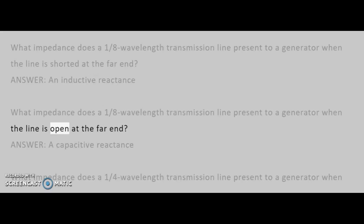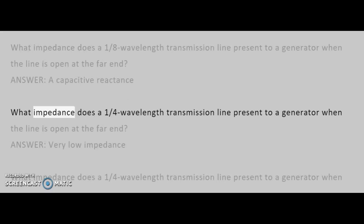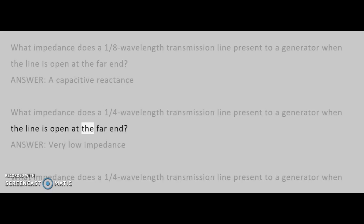What impedance does a one-eighth wavelength transmission line present to a generator when the line is open at the far end? Answer: A capacitive reactance. What impedance does a one-quarter wavelength transmission line present to a generator when the line is open at the far end? Answer: Very low impedance.